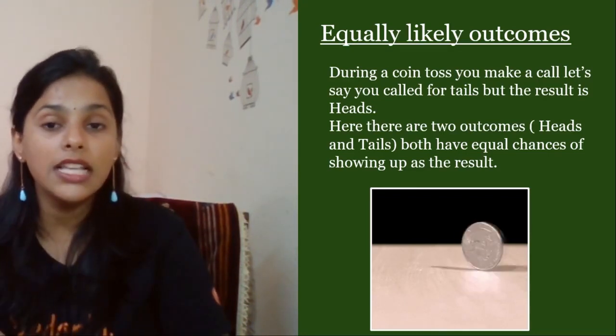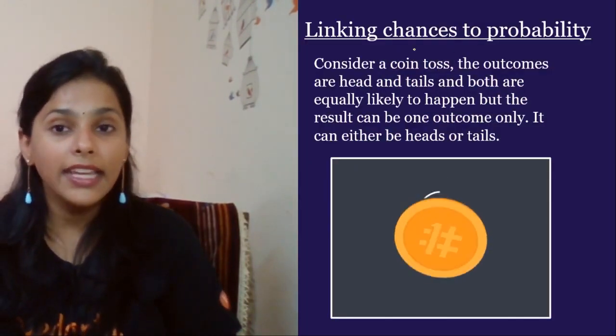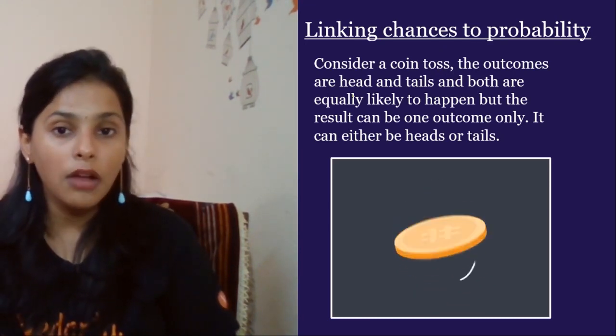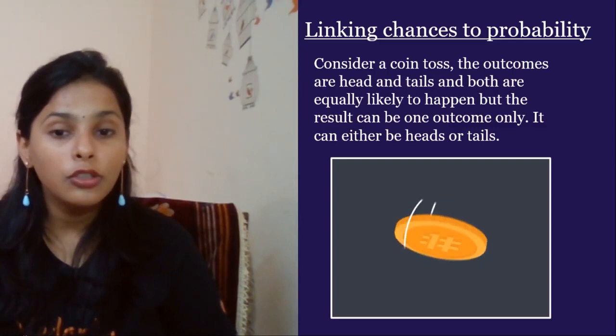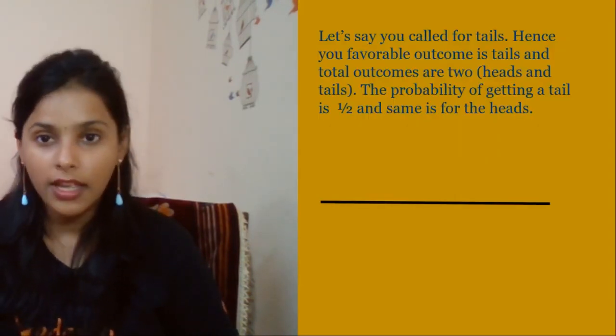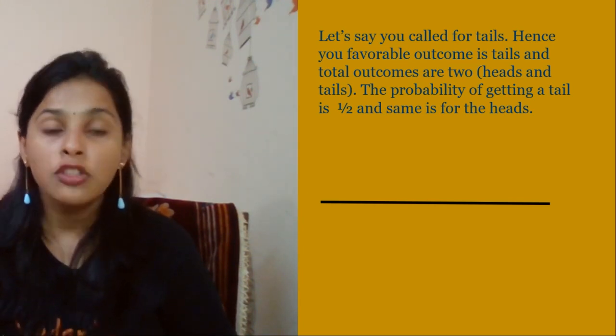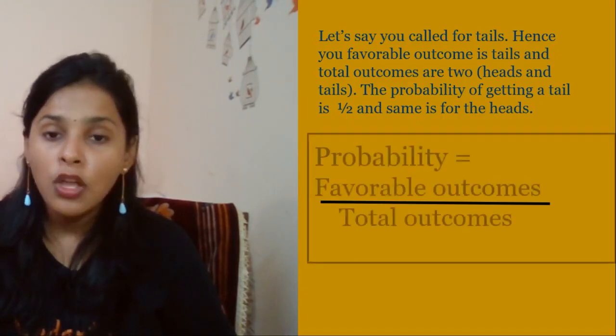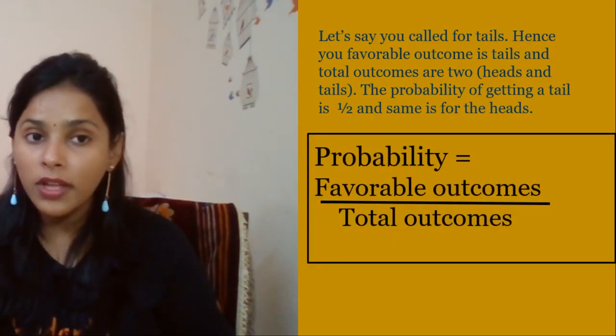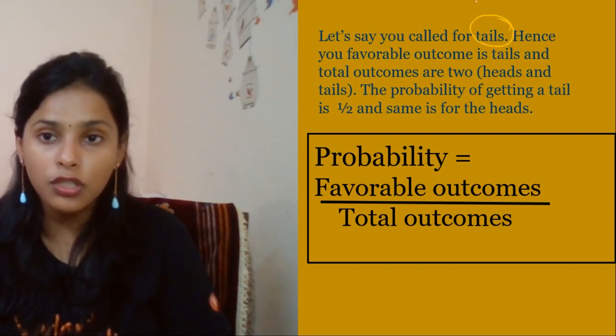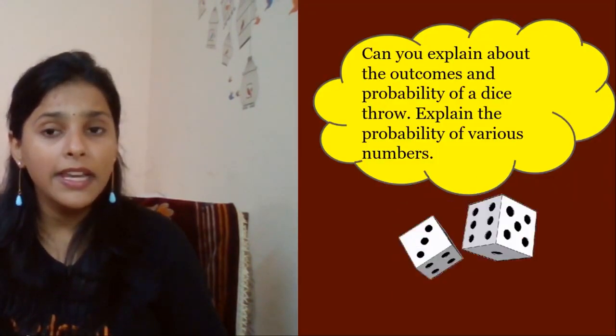Likely chances or probability. Consider a coin toss. The outcomes are head and tail, and both are equally likely to happen. But the result can only be one. Let's say you have called for tails. Hence your favorable outcome is tails, and total outcomes are two. So the probability of getting the tail is half. How? Probability is equal to favorable outcome divided by total outcome. What is your favorable outcome? That is one, which is tail. So one out of two, that is why half is the probability. Can you explain about the outcomes and probability of a dice thrown?